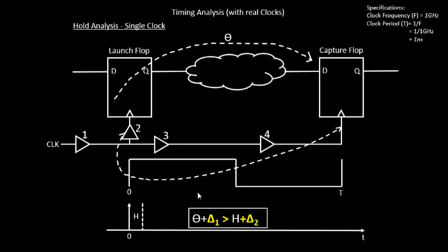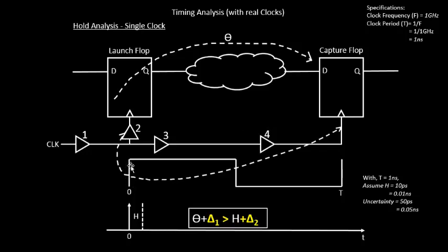So this was about the hold timing equation. Now to add more uncertainties to it: we assume a hold time of 10 picoseconds and an uncertainty of 50 picoseconds. Actually, uncertainty doesn't matter much here because the edge going to the launch flop and the capture flop is the same. So the amount of jitter that plays a role for both flops will be the same — for example, if this clock edge doesn't arrive at zero but at 10 picoseconds, the arrival difference will be the same for both.